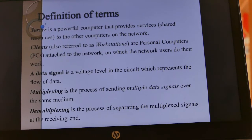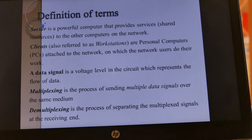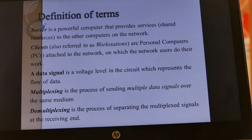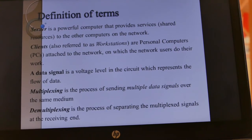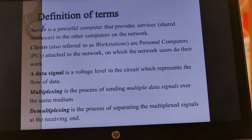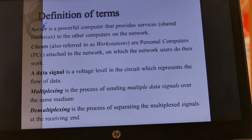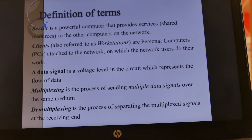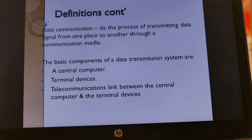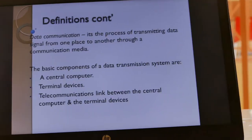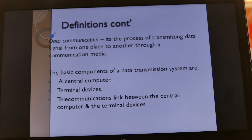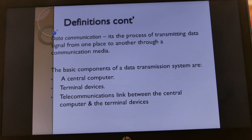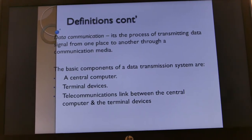We also have multiplexing, which is the process of sending multiple data signals over the same medium. Demultiplexing is the process of separating the multiplexed signals at the receiving end. We also have data communication, which is the process of transmitting data signals from one place to another through a communication media.